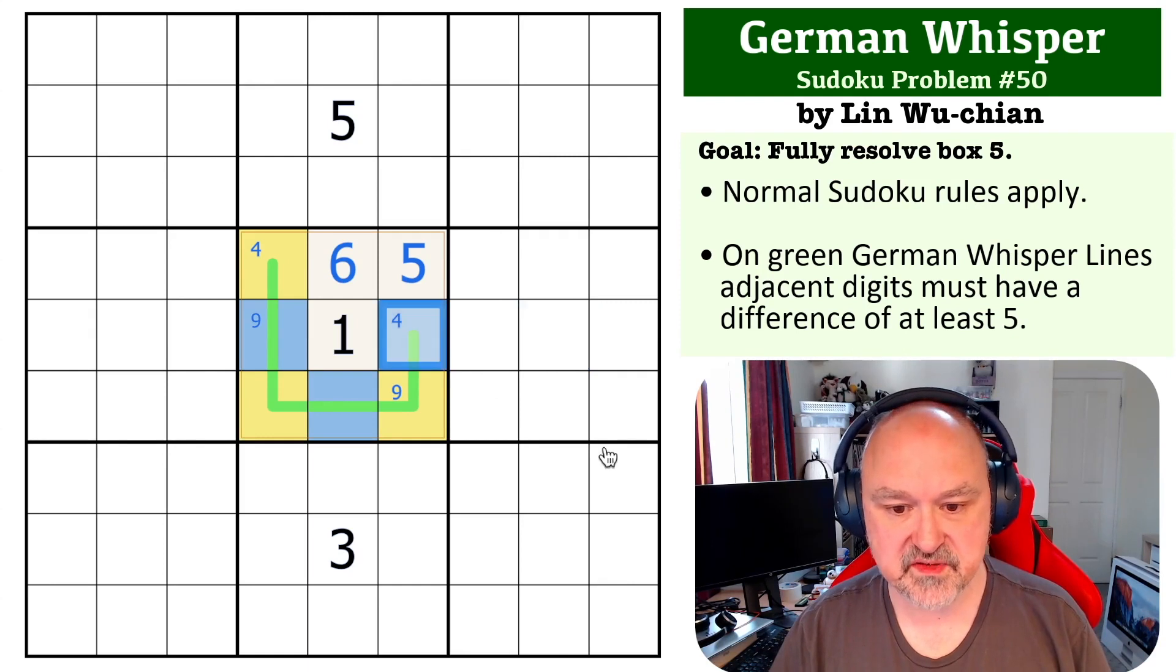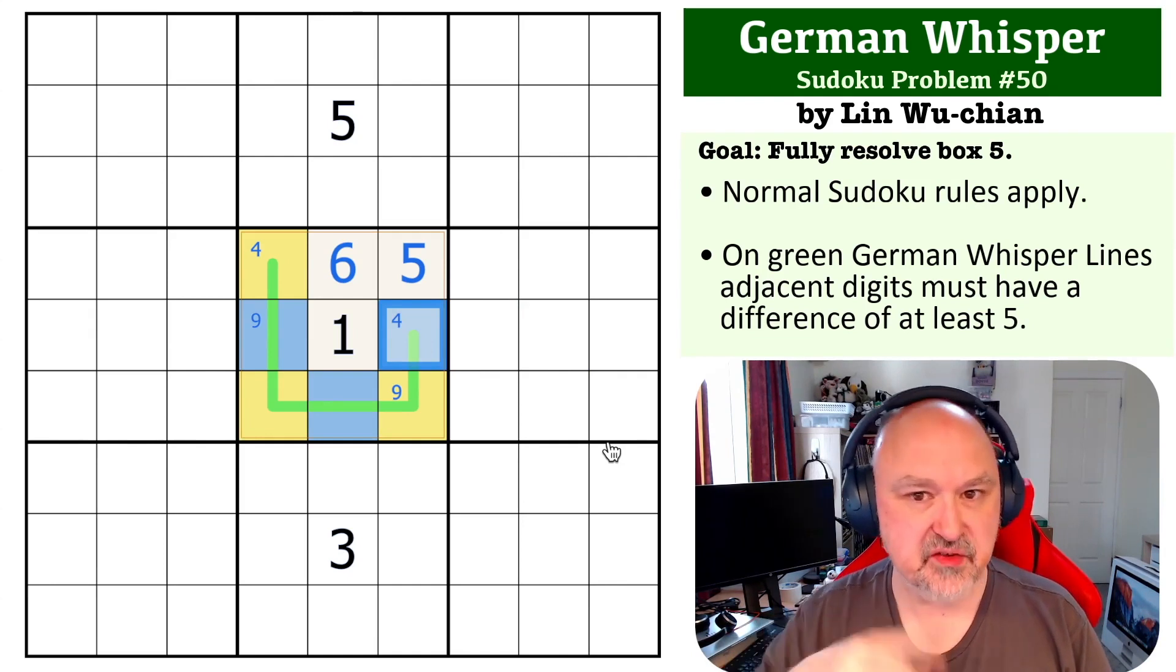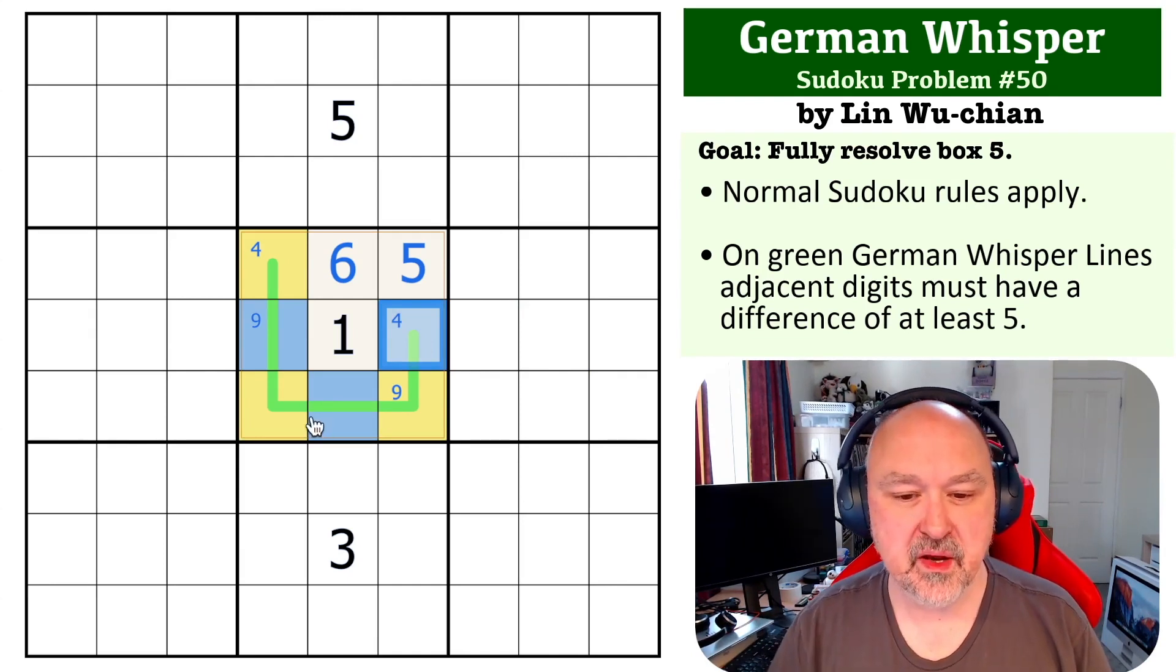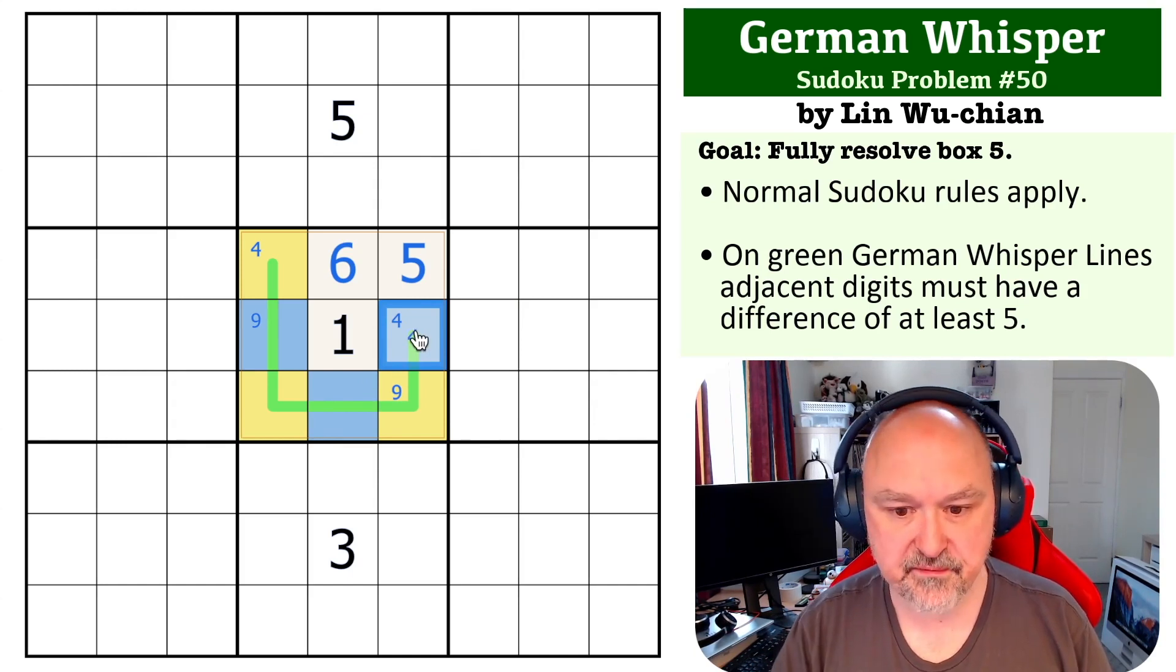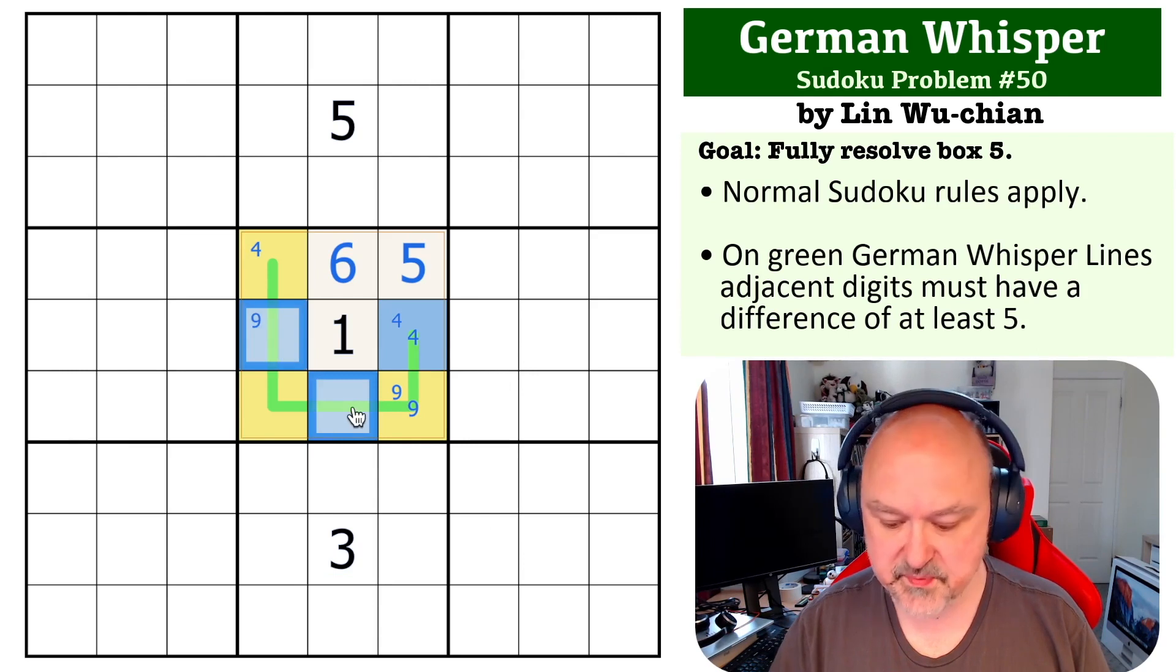Now, the question we want to ask ourselves is what happens if this is a four? Because, and you basically try from each direction, but if this is a four, we're going to run into a problem because this will be a four, this will be a nine, but these become low digits now, and these become high digits.